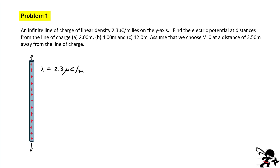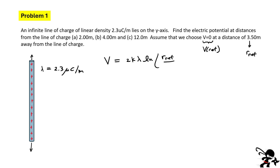Here is the first problem. We have an infinite line of charge with a linear density of 2.3 microcoulombs per meter lying along the y-axis. Find the electrical potential at distances of 2 meters, 4 meters, and 12 meters from the line of charge, given that V equals zero at a distance of 3.5 meters from the line of charge. That 3.5 meters is our reference point. Going back to our equation, the potential at any distance is 2K lambda times the natural log of R-ref divided by R. We simply substitute our values in each case.